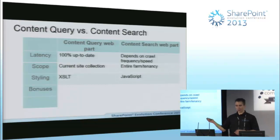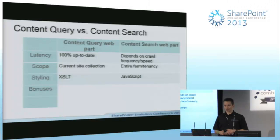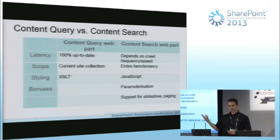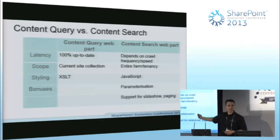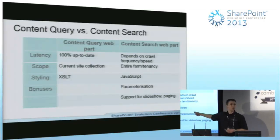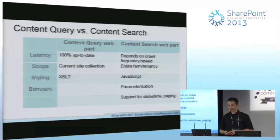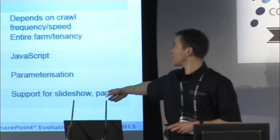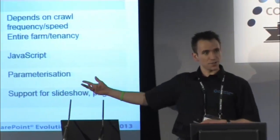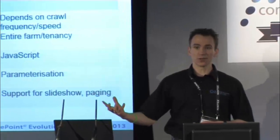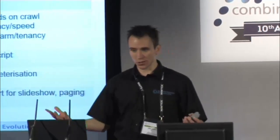In terms of styling, content query web part was XSLT; content search web part is JavaScript. The content search web part also offers parameterization — if I want to show articles related to the current user or their department, I can pass this into the content search web part without custom coding. We also get additional rendering capabilities like slideshows and paging, which required custom code in the content query web part — Microsoft have done more of that work for us.